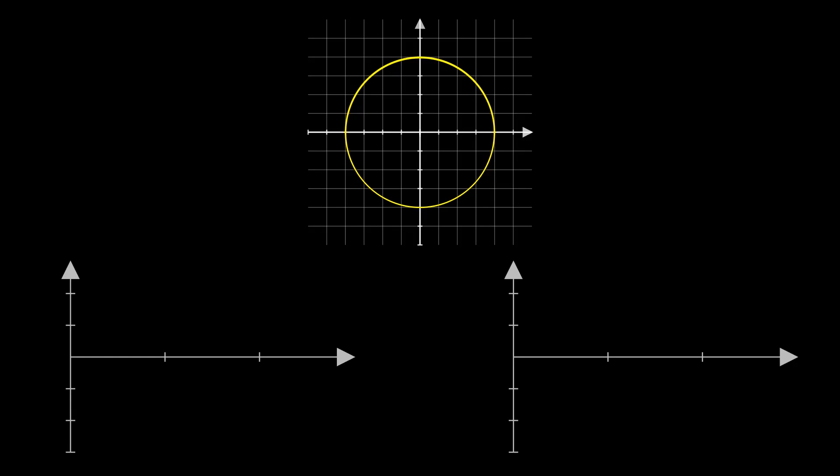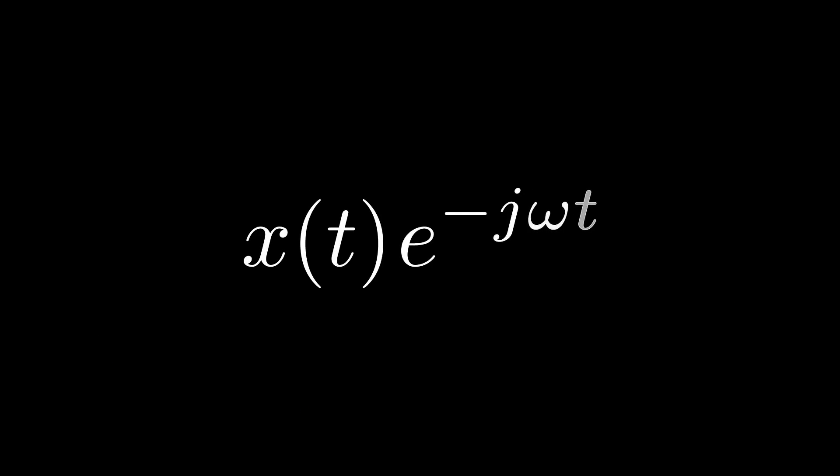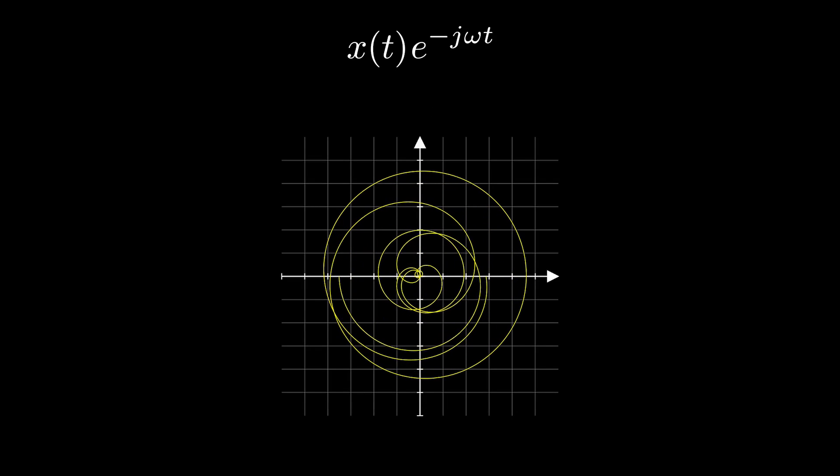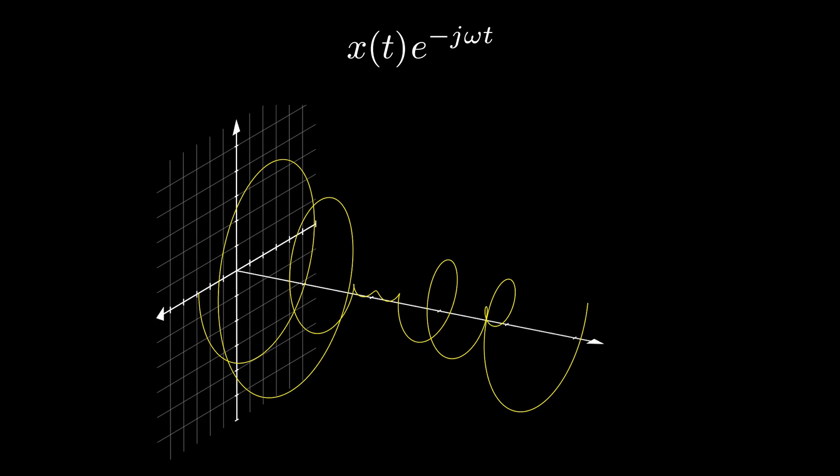From Euler's formula, complex exponentials are composed of a real part which is the cosine function, and an imaginary part which is sine. So what happens when we have a complex exponential with variable amplitude that changes as a function of time? The variable amplitude leads to a complex exponential with variable radius depending on the amplitude function.